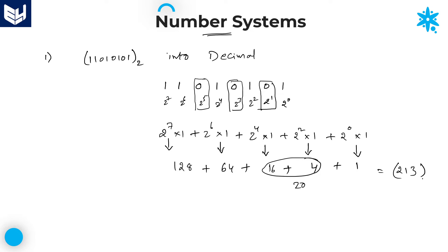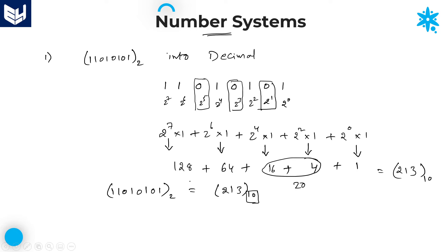This is the corresponding decimal number. The given binary number is 11010101, and its decimal number value is 213 base 10. The base value is very important — without mentioning the base value, we cannot say exactly whether a number is decimal, octal, or hexadecimal, because those systems also contain the digits 2, 1, and 3. So base value is very important.